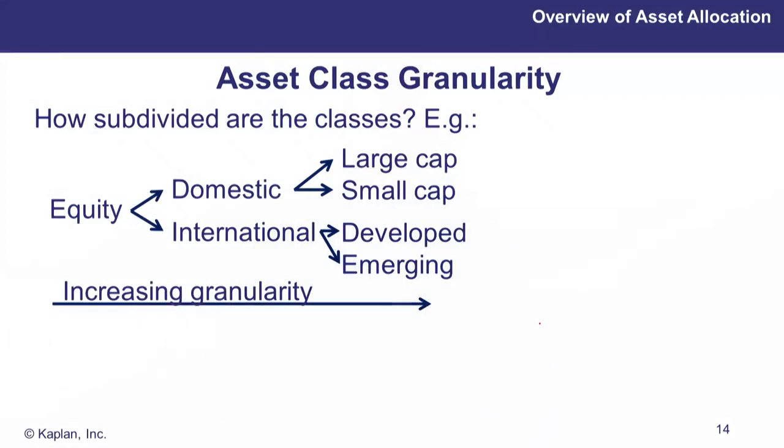Increasing granularity means splitting an asset class up into smaller, more specifically defined sections. Our very low granularity asset class would be equities — all equities worldwide. We can split it up into domestic and international; from a US perspective that's US and non-US. Then further into large cap and small cap, or internationally into developed and emerging economies. As granularity increases, asset classes become more specific and the number of assets in each class decreases.